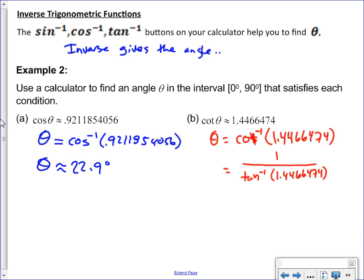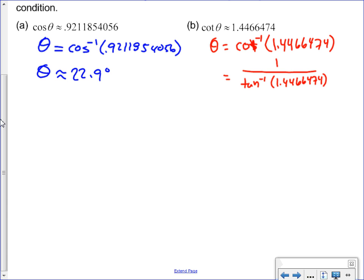You have to do the 1 divided by first. So 1 divided by 1.4466474, and then hit enter. And then second tan. That's it. Another way to write this, you're going to do the inverse tan of 1 over 1.4466474. Do the 1 divided by first, and then hit inverse tan. And so you should get about 34.65 degrees.